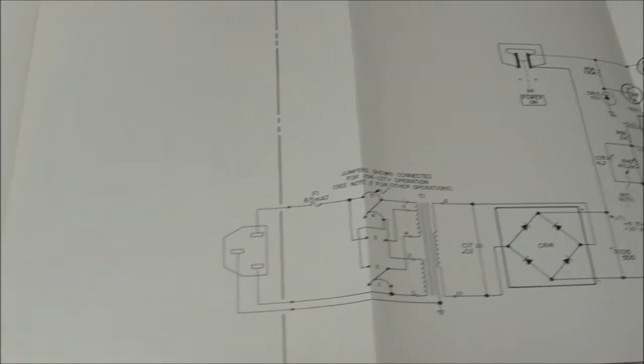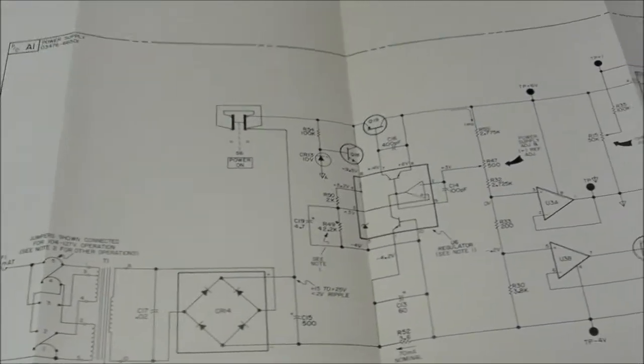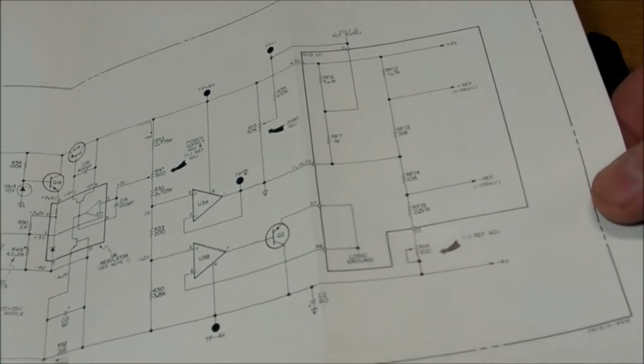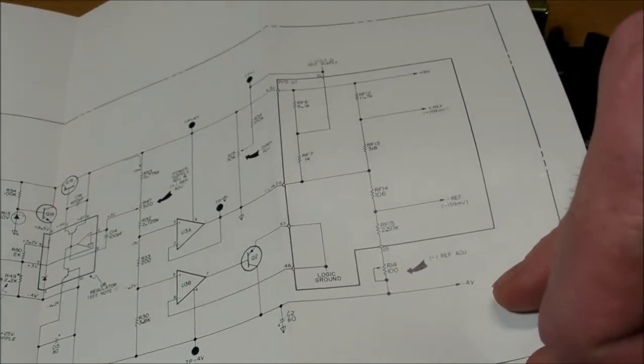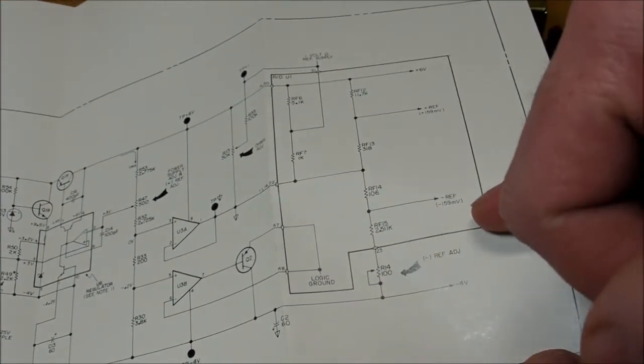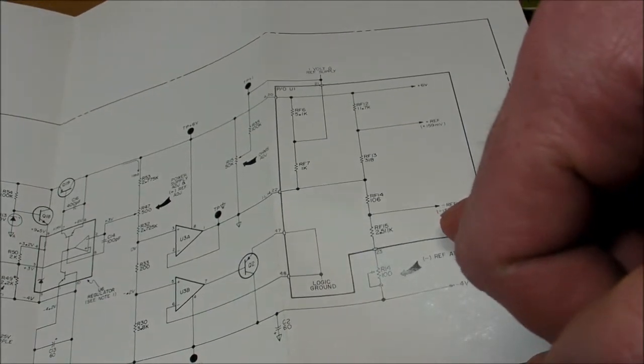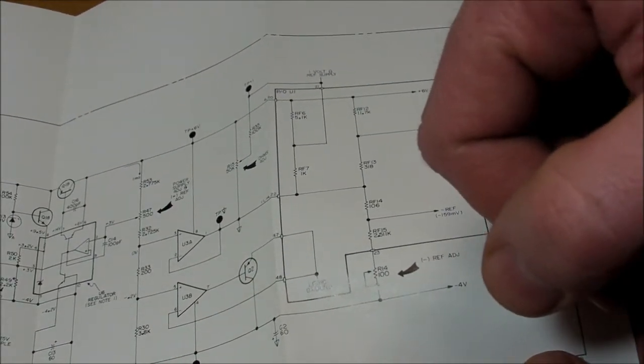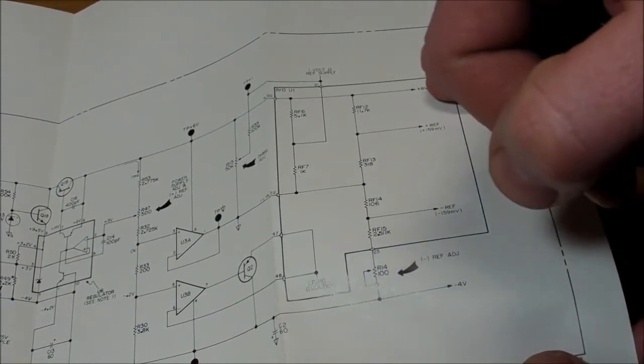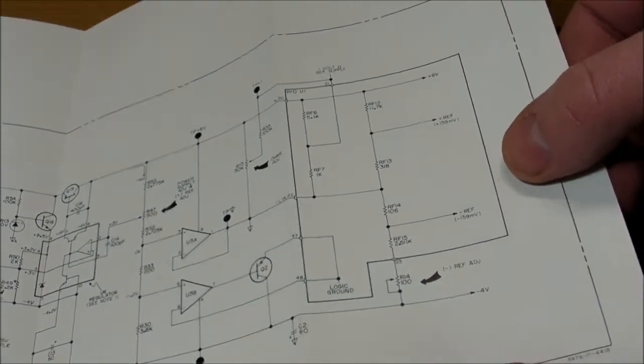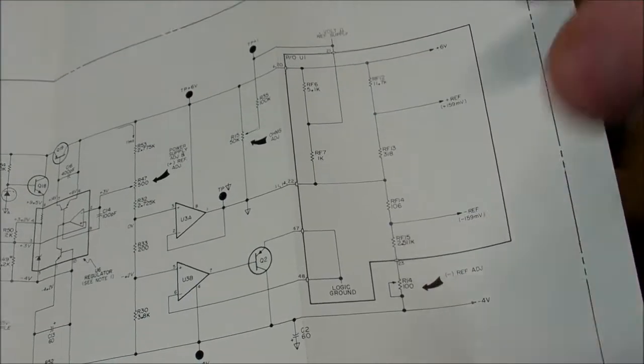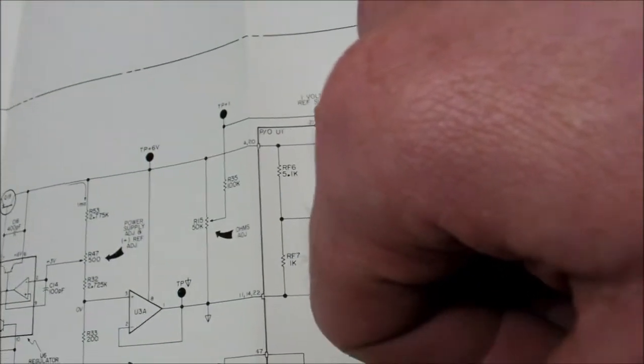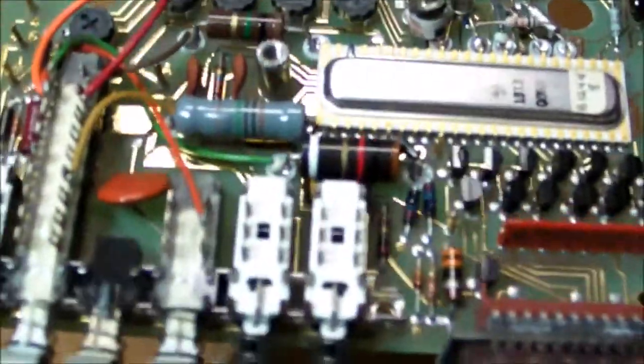Here's the schematic for the power supply part, and you can see all that stuff ultimately outputting negative 4 volts and negative 159 millivolt reference, positive 159 millivolt reference, and a positive 6 volt. Oh, and there's also a 1-volt ohm reference for the ohmmeter part of it.